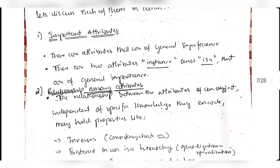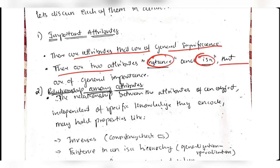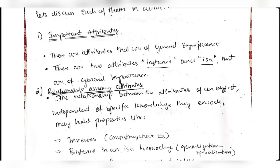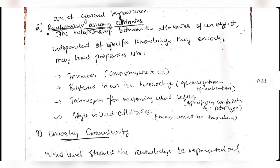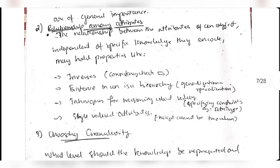The first issue is important attributes. There are attributes of general significance. Two types of attributes - instance and is-a - are of general importance. We need to identify which are the important attributes. Those having instance and is-a kinds of relationships are called important attributes.